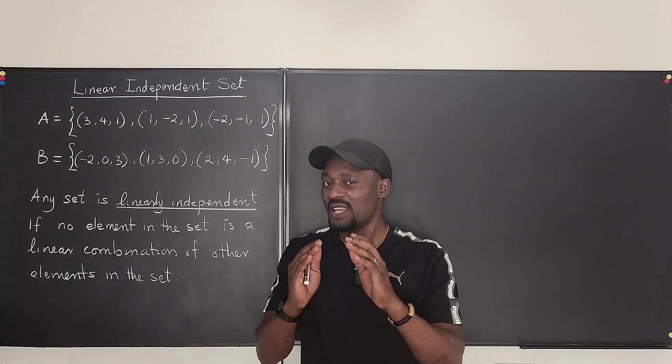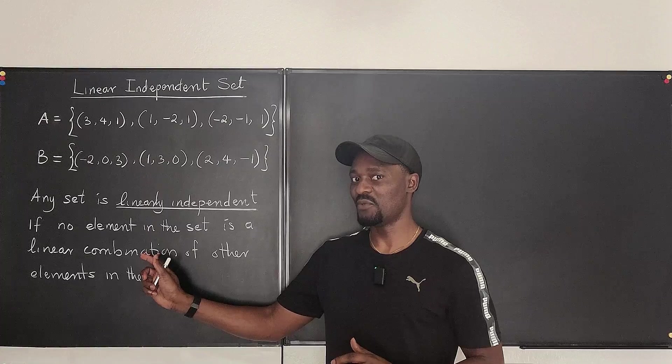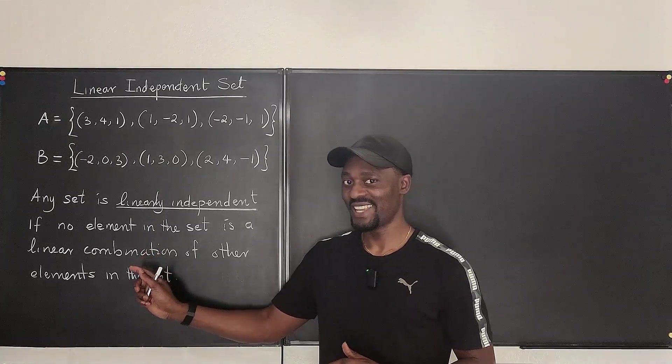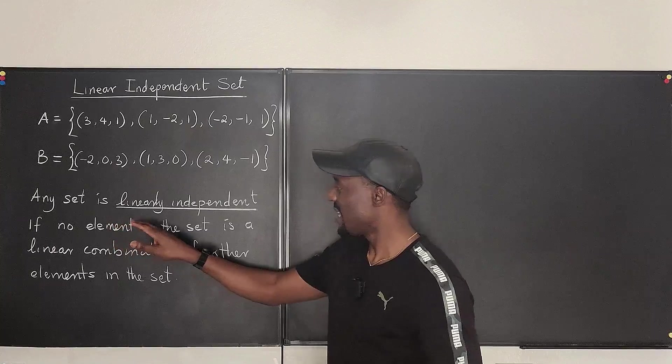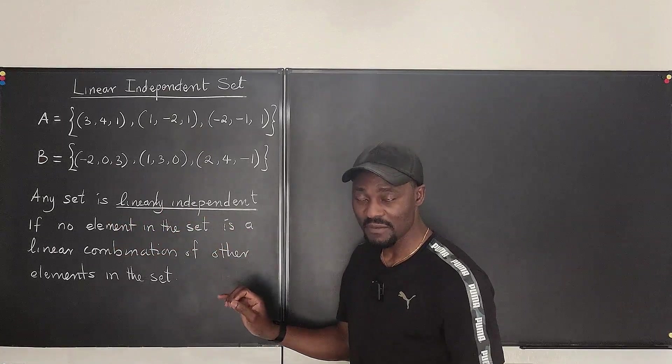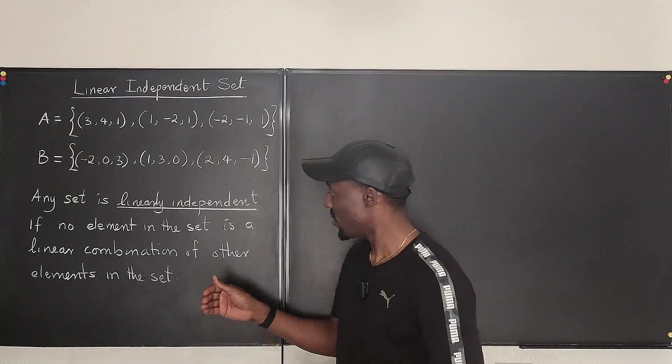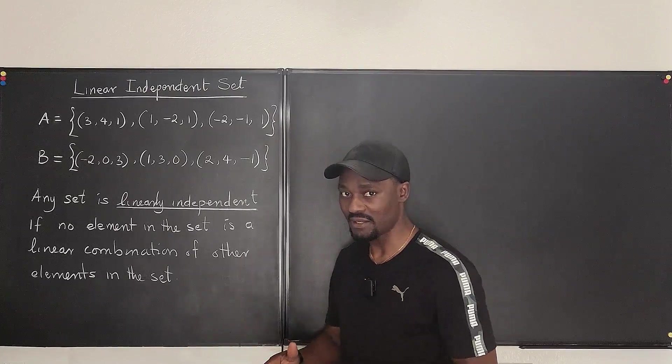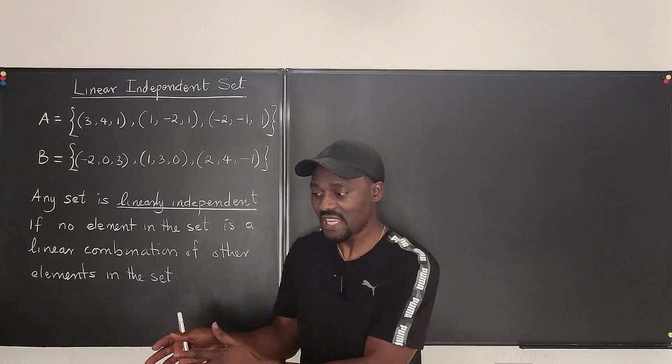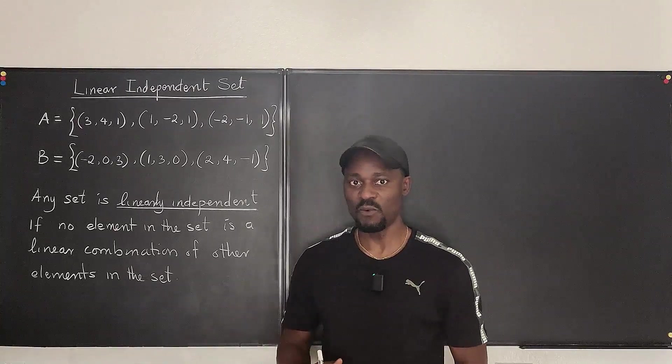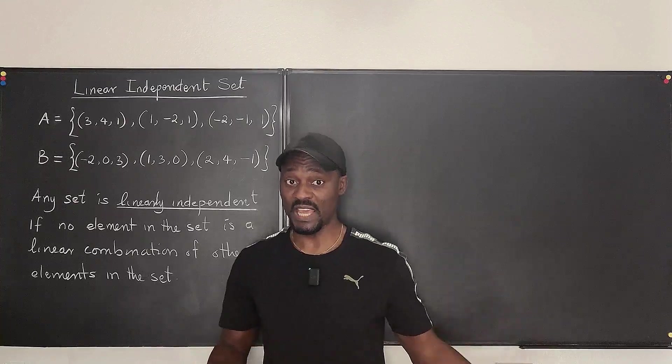And let me just tell you what that means by reading what I've already written on the board. It simply means that a set is linearly independent if no element in the set is a linear combination of other elements in the set. Which means two members of the set cannot gang up together to get rid of one or gang up together to duplicate another.